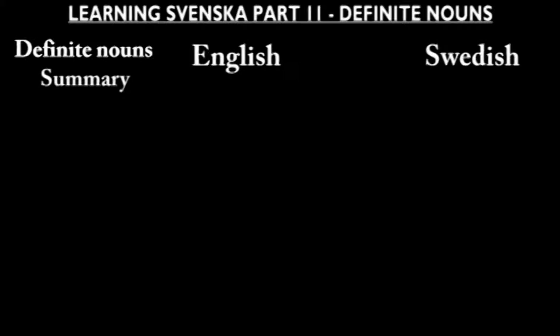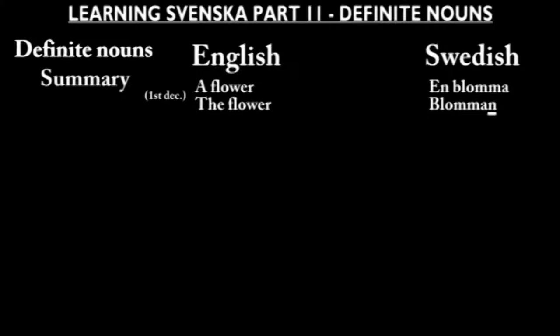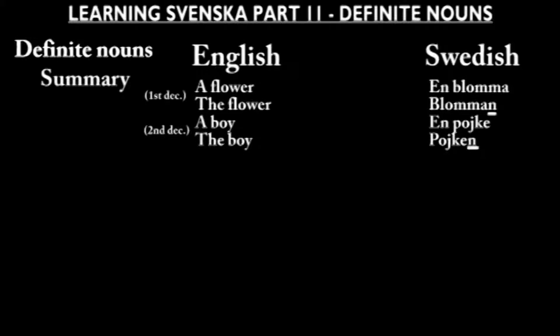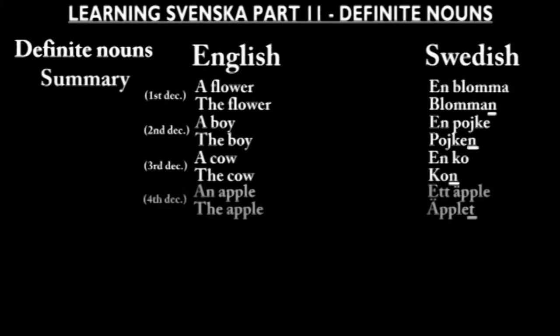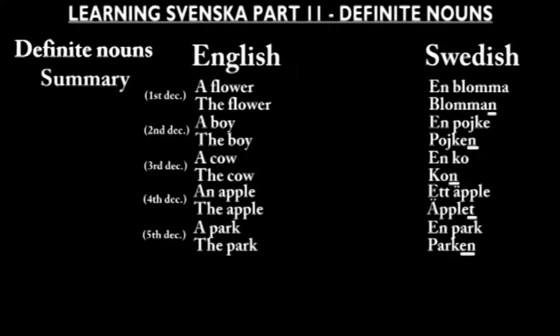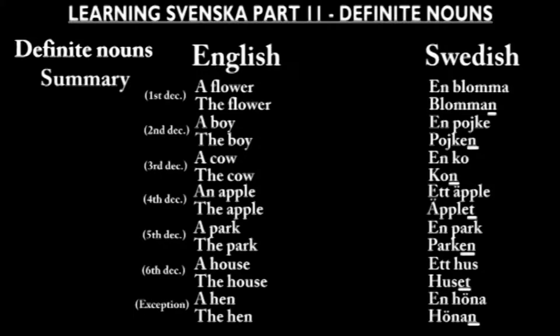Let's take seven examples with nouns that we saw in the last episode, one from each declination. I will go through the singular forms first for all seven words and then the plural forms, hopefully to help you see the pattern clearly. En blomma: blomman. En pojke: pojken. En ko: kon. Ett äpple: äpplet. En park: parken. Ett hus: huset. En hörna: hörnan.